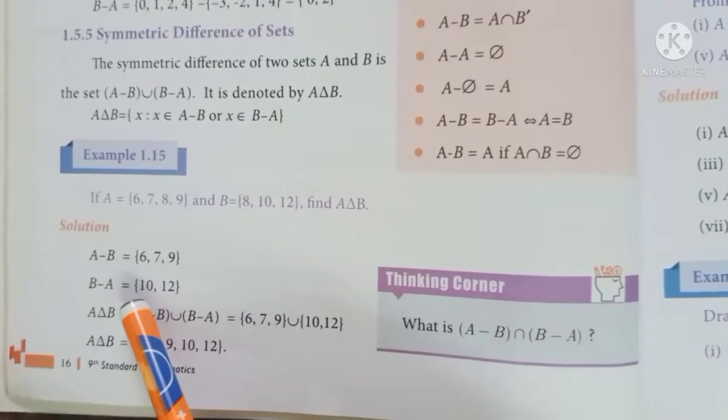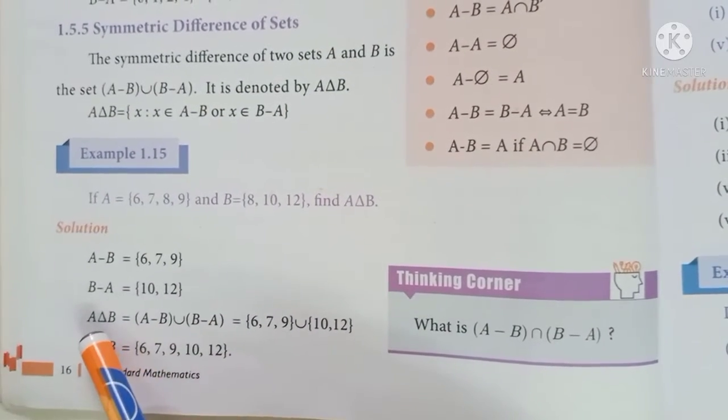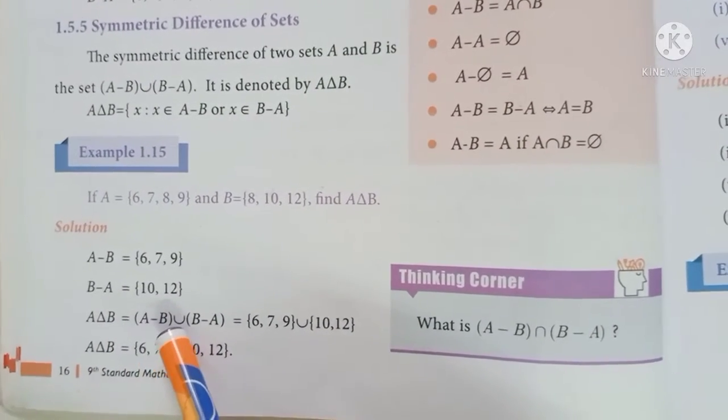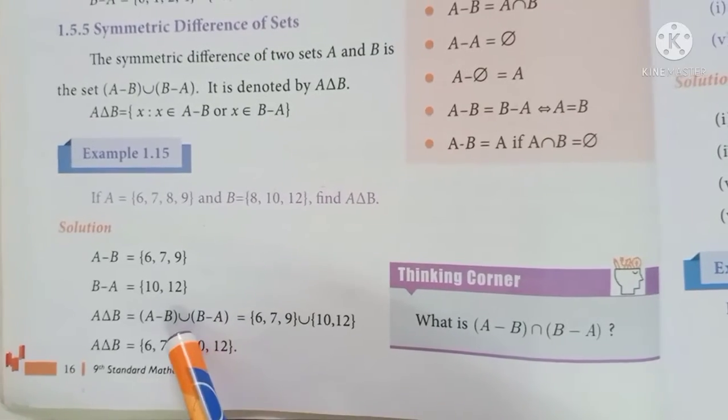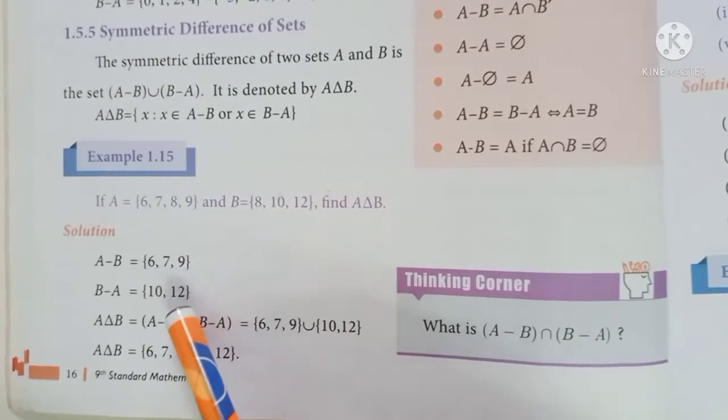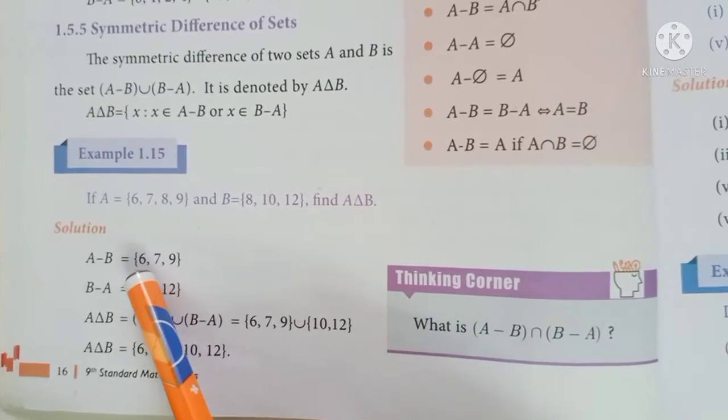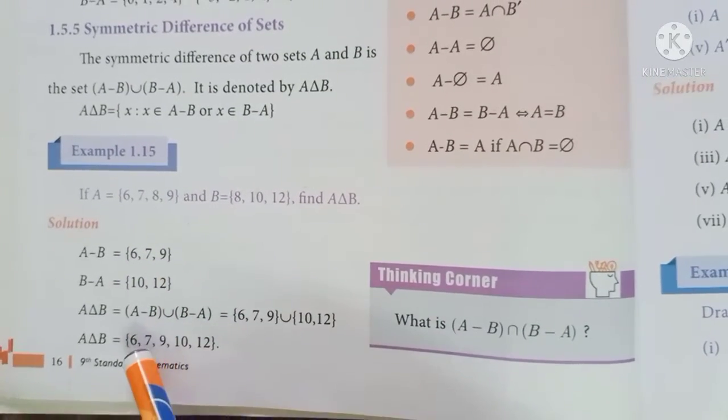So the symmetric difference A delta B equals A-B union B-A, which gives us {6, 7, 9, 10, 12}. This is the answer.